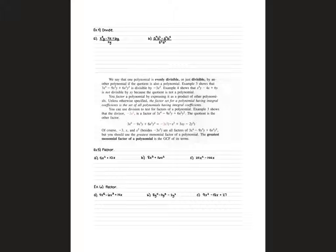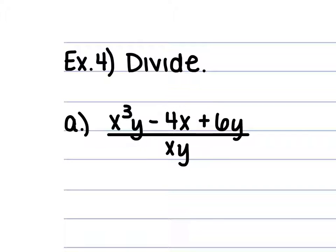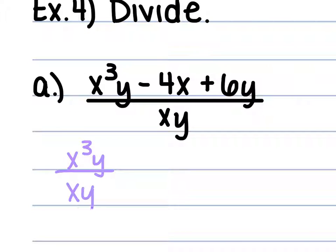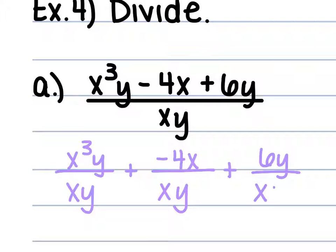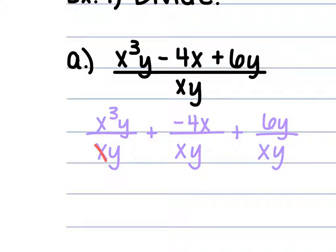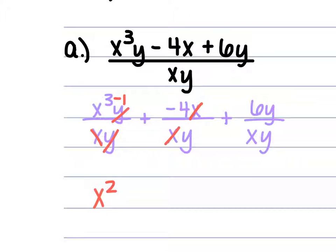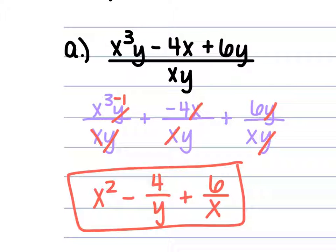For the next example, we have x³y minus 4x plus 6y, all over xy. We break this up: x³y over xy gives x² (x cancels once, y's cancel). Negative 4x over xy: the x's cancel, leaving minus 4 over y. Then 6y over xy: the y's cancel, leaving 6 over x. So the solution is x squared minus 4 over y plus 6 over x.